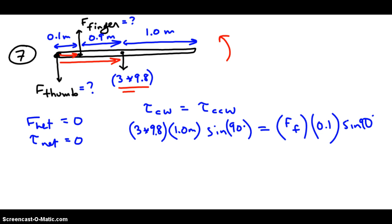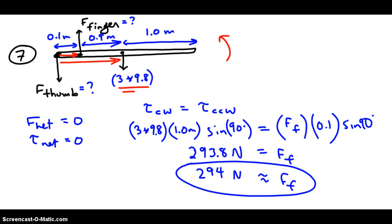So we solve for the force of the finger, and what do we get? This comes out to be about 293.8 newtons, or if we round for sig figs, 294. The next thing and the final thing that we do is we use this piece of information to solve for the force of the thumb.